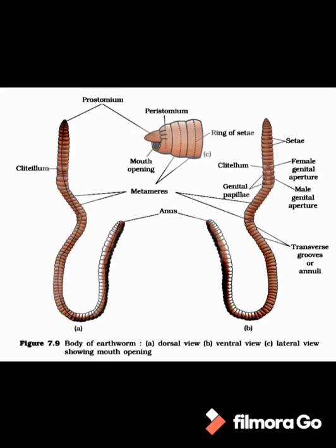The first segment is called peristomium, in which the mouth is present, and the last segment has the external opening of the digestive system, that is the anus. On the peristomium, a lobular structure called prostomium is present. Prostomium is sensory in function. In earthworm, segment numbers 14th, 15th, and 16th fuse with each other, and on this fused segment a glandular tissue thick band is present which is called clitellum.